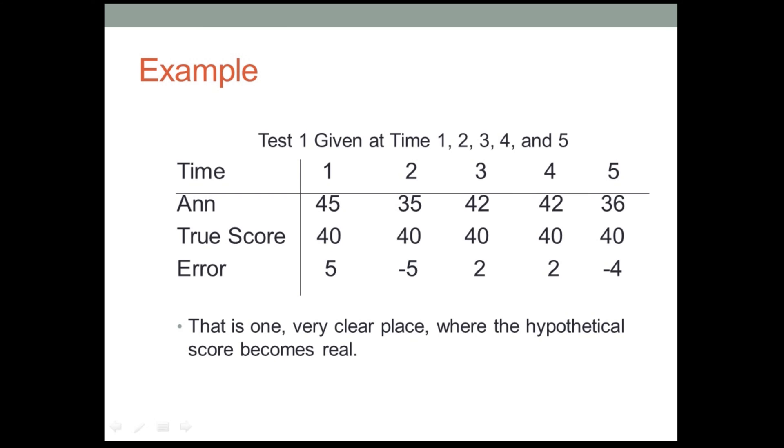So Anne takes this creativity test five times, and sure enough, she gets a 45 the first time, a 35 the second time, a 42, a 42, and a 36. But according to classical, and that's shown in the first row there, but according to classical test theory, her true score hasn't changed. Her creativity has stayed the same. Her true value on this scale is 40 in each instance. And what's changed is the error that the test picked up.